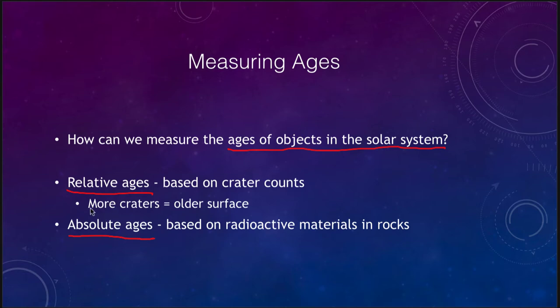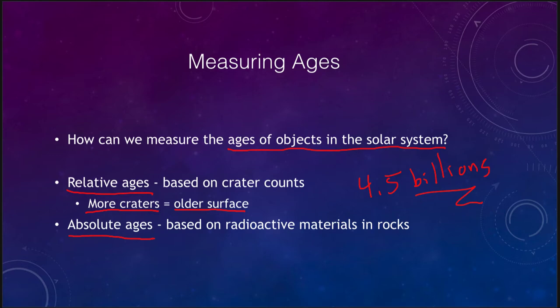The more craters you see on the object, the older the surface is. Remember that everything in the solar system is about four and a half billion years old, but that does not mean that their surfaces have been unchanged all that time. Things like the moon have been relatively unchanged over the last few billion years, while Earth's surface looks nothing like it did a couple of billion years ago. So crater counts tell you not how old the object is, but how long it's been since the surface was resurfaced. We can use this throughout the solar system because the cratering rate has been effectively the same.